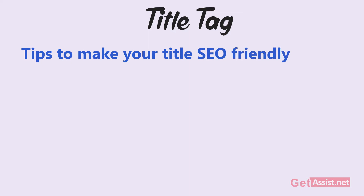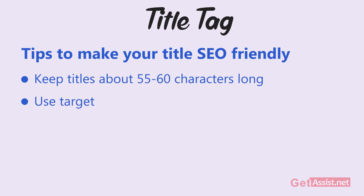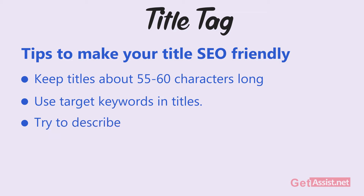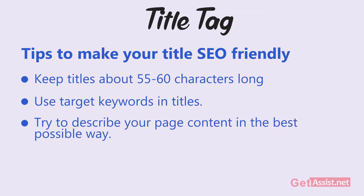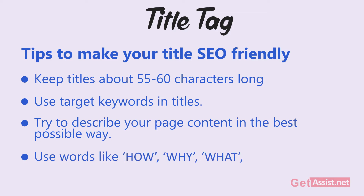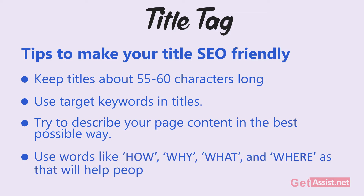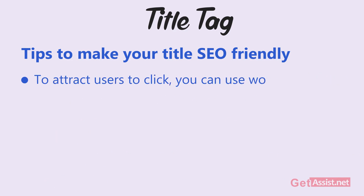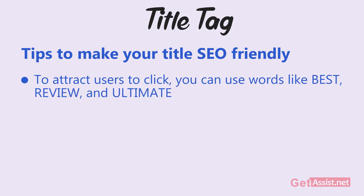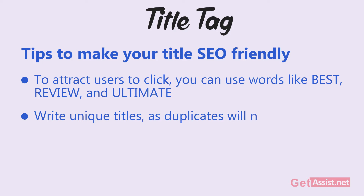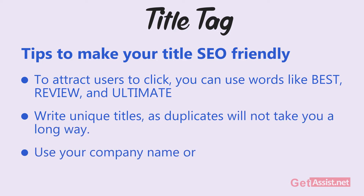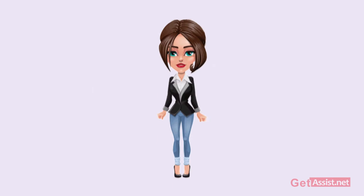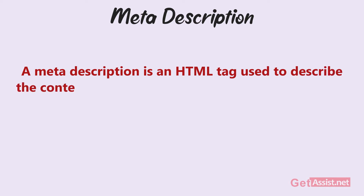Here are some tips to make your title tags SEO friendly: keep titles about 55 to 60 characters long; use target keywords in your titles; try to describe your page content in the best possible way; use words like how, why, what, and where, as that will help people understand what they will find on the page. To attract users to click, you can use words like best, review, or ultimate. Write unique titles, as duplicates will not take you a long way. Use your company name or brand wisely.